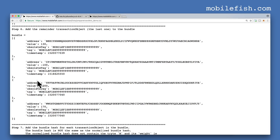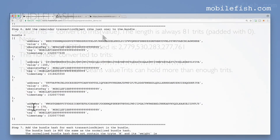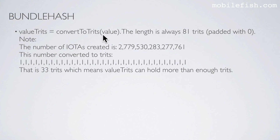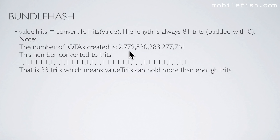For each transaction object in the bundle, we take the value which is an integer and convert it to trits. So this is the value in trits. The length is always 81 trits. If it is not 81 trits, it is padded with zeros. The number of iotas created is this large number. If you convert this number to trits, you will get 33 trits, which means value trits can hold more than enough.